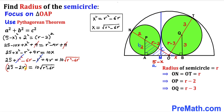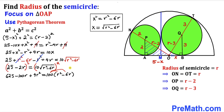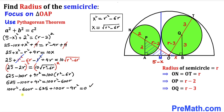Squaring both sides: (25 − 2r)² = 100(r² − 6r). Expanding the left side using the identity gives 625 − 100r + 4r². Distributing 100 on the right gives 100r² − 600r. Moving everything to one side and combining like terms: 96r² − 500r − 625 = 0.